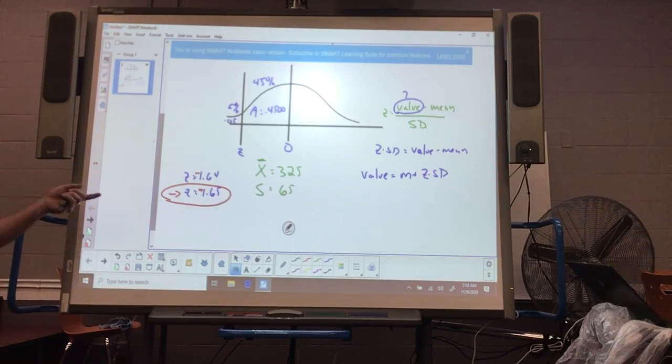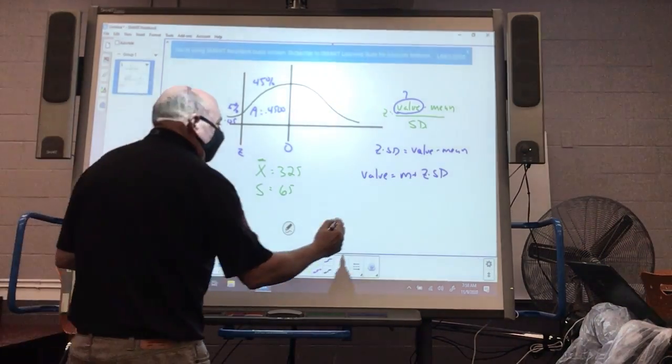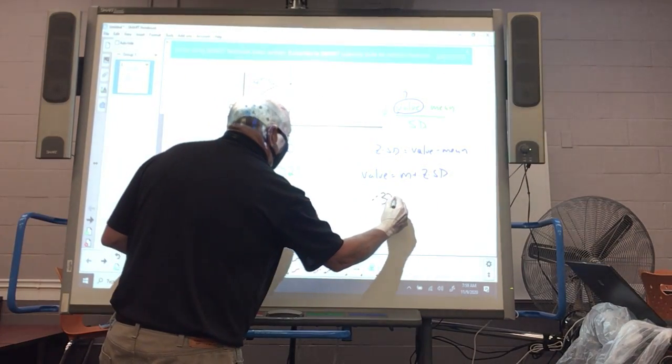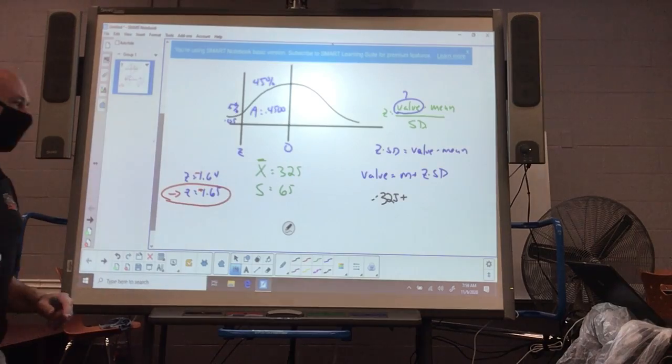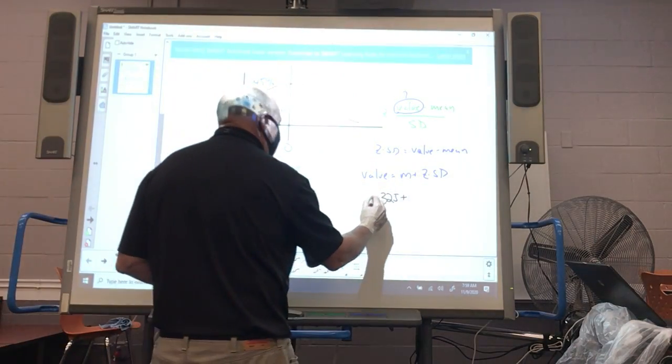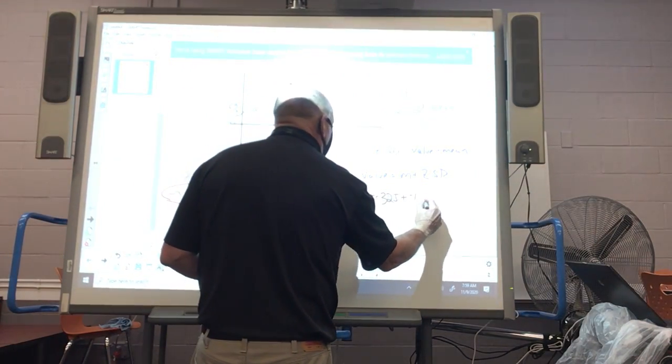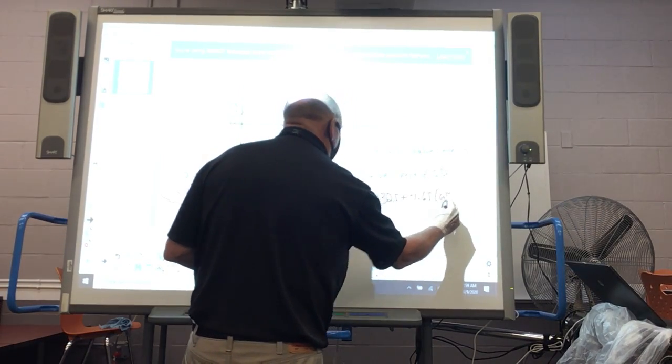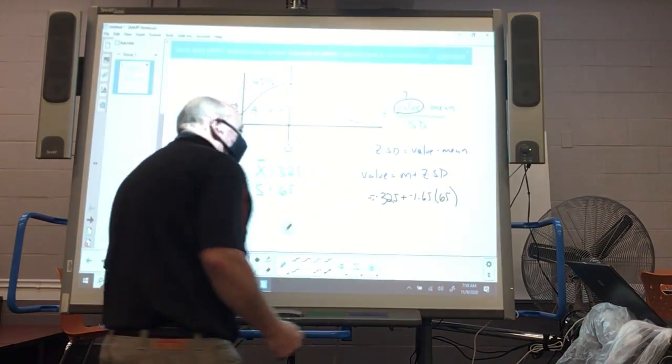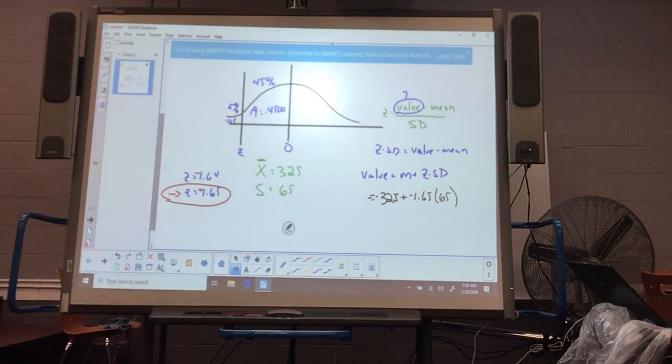So we can throw in the values. The mean is 325, our z-score is negative 1.65, and the standard deviation is 65.